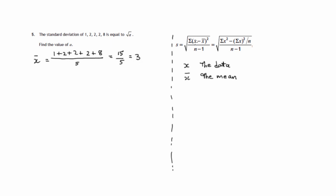So, we know what this is. We know what this is. N is the number of pieces of data. So, in this case, N would be 5.